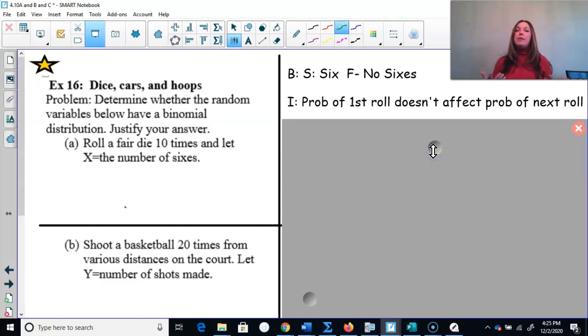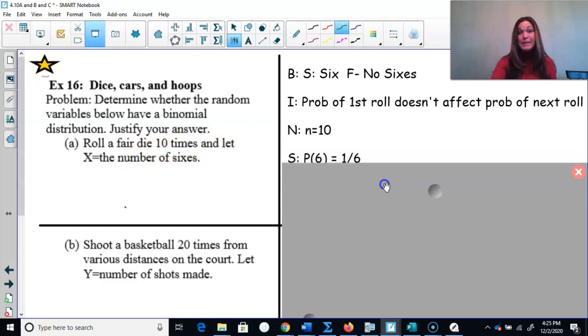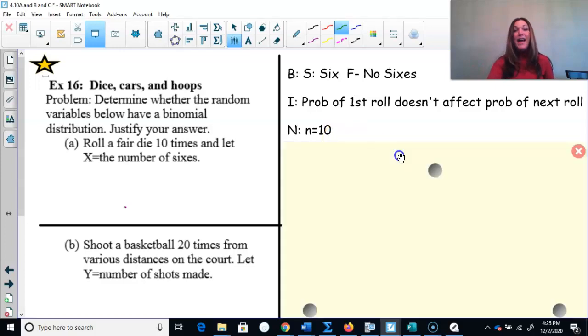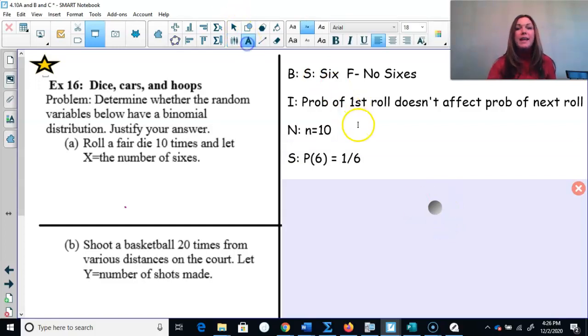N is equal to the number of trials are fixed. And in this case, we are rolling that fair die 10 times. So lowercase n is equal to 10. 10 times we are rolling that die, fixed number of trials. S - the probability of success is the same each time. Each time I roll that die, the probability of getting a six is one out of six. We have a binomial setting here. Yes, binomial.